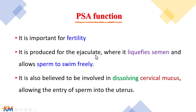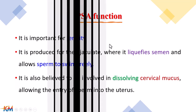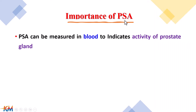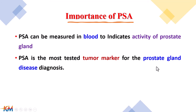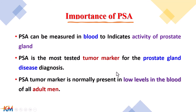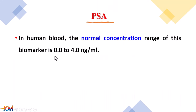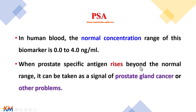Therefore, prostate specific antigen is important for fertility in males. Because its concentration is low in the blood, PSA can be measured to indicate activity of the prostate gland. PSA is considered the most tested tumor marker for prostate gland disease diagnosis, because any increased activity or problem in the prostate will affect blood levels. The normal concentration range of PSA is from 0 to 4 nanogram per milliliter. Any rise above this normal value gives a signal of prostate gland cancer or other problems, which will be discussed in the interpretation section.